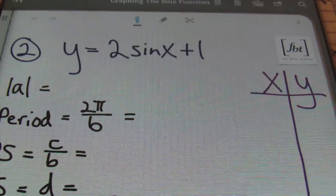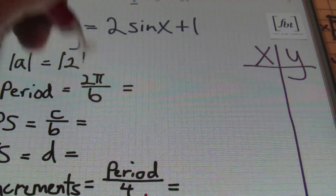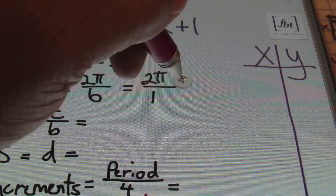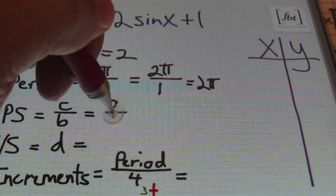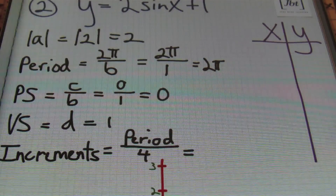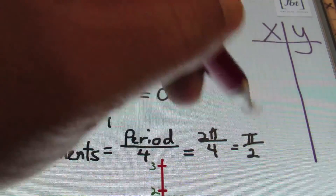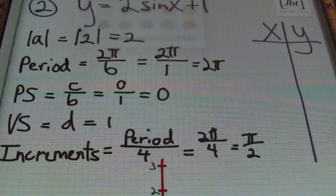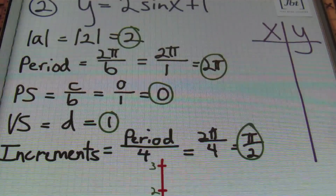Problem number two: y equals to 2·sin(x) + 1. My amplitude is the absolute value of 2, which is 2. The period is 2π over b — b is 1 here, so the period is 2π. My phase shift (c over b) is zero, since I have no c value. My vertical shift d is 1. And my increments are 2π over 4, which simplifies to π/2.